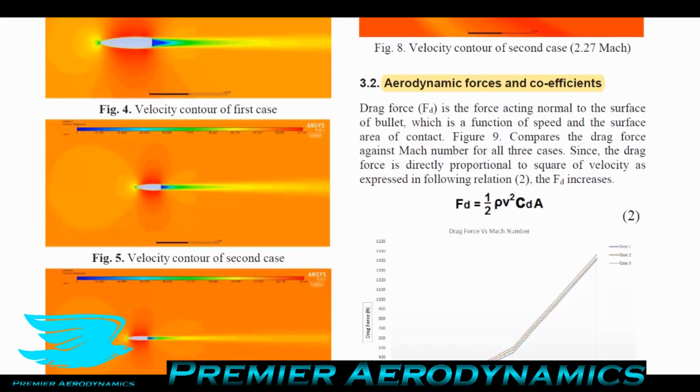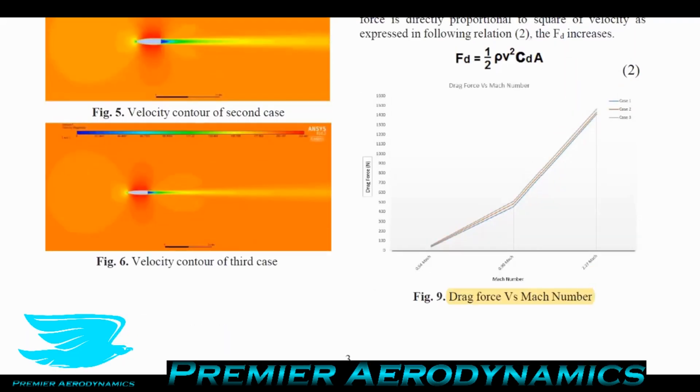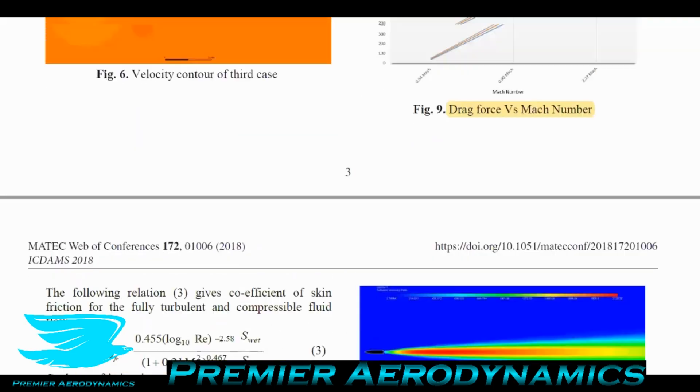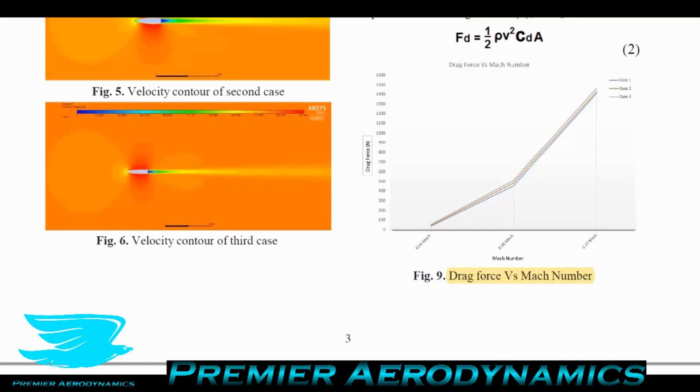Coming back to the paper, they show aerodynamic forces and coefficients with a graph of these bullets at three different Mach numbers. Interestingly, at Mach 0.54 there's some difference in drag between cases. At Mach 0.9 these differences dramatically increase. But at Mach 2.27 the differences aren't that much greater even though velocity is two and a half times higher. Because you've pushed through the transonic regime, you're dealing with less draggy flow. At transonic flow, the differences in drag between these three bullets are greatest.